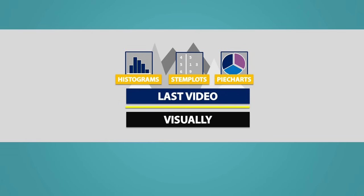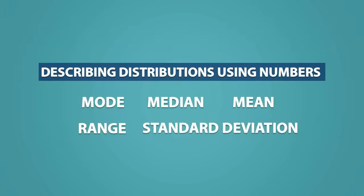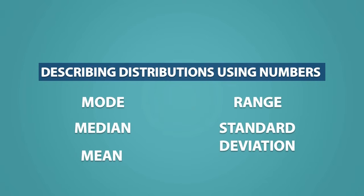However, there is another way we can describe a distribution, and that way is by using numbers. The mode, median, mean, range, and standard deviation give us numerical information about the distribution of a dataset.